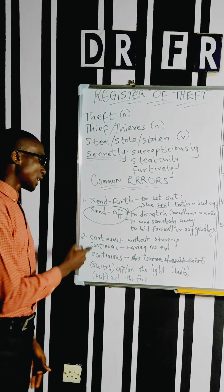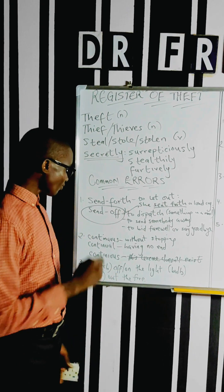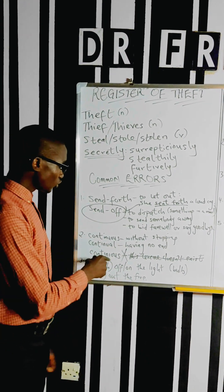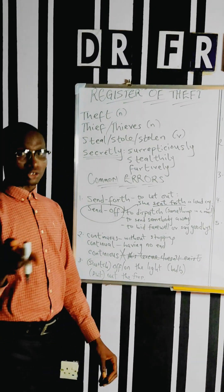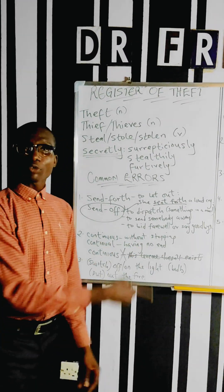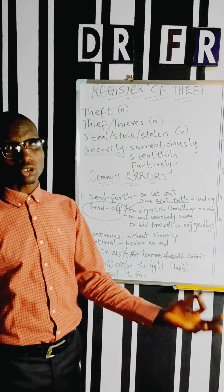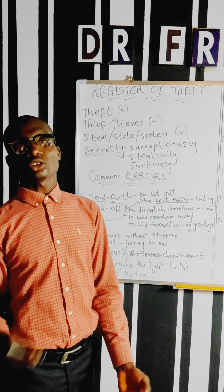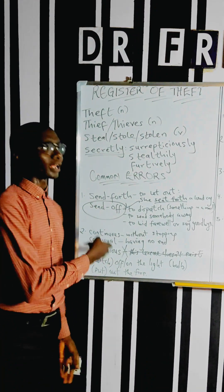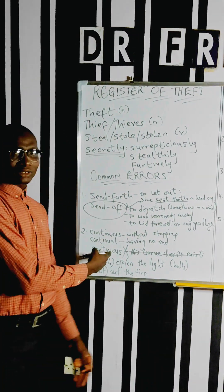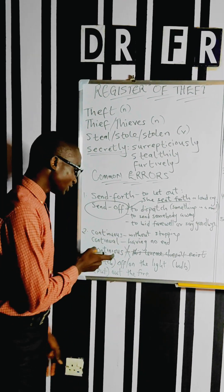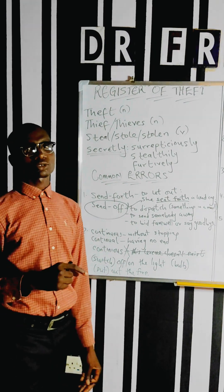Then we have these three words: continuous, continual, and 'continuious.' I find it very hard to believe that this word exists in English — it is not. There's nothing like 'continuious.' You can check your dictionary. The two words we have are continuous and continual. Both of them mean almost the same thing: without stopping. When something is incessant, something is continuous — it continues for a long period of time. I am bringing these up to tell you that 'continuious' does not exist in English.